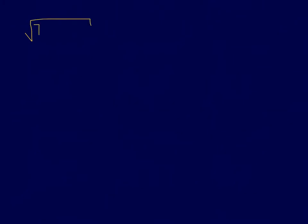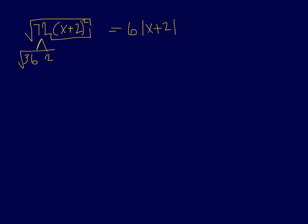Let's find the square root of 72 times (x plus 2) squared. 72 is 36 times 2, and (x plus 2) squared is a perfect square. So if we simplify, the square root of 36 is 6, and the square root of (x plus 2) squared is (x plus 2) — but because it is squared, you need the absolute values. Then we multiply by the square root of 2, which was not a perfect square. So our final answer is 6 times the absolute value of (x plus 2) times the square root of 2.